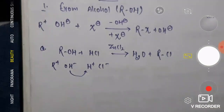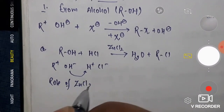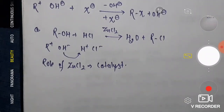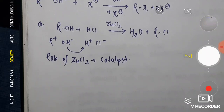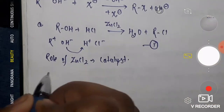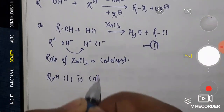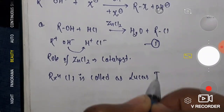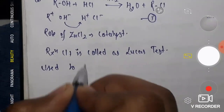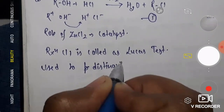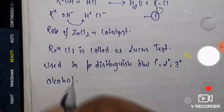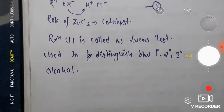This reaction is carried out in the presence of ZnCl₂, which behaves as a catalyst. This reaction is called the Lucas test, and it is used to distinguish between primary, secondary, and tertiary alcohols.